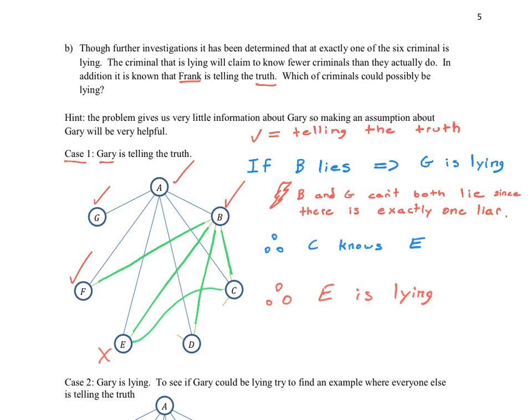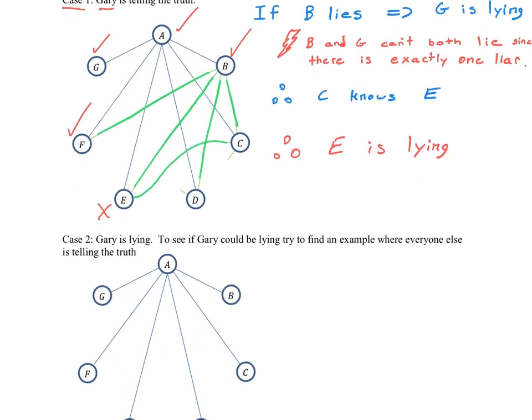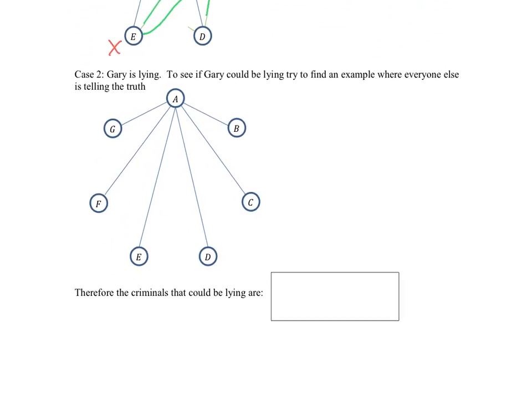Let's take a look at case two. In case one, it was forced that E was the liar. Could there be any other possible liars? In case two, we're now assuming that Gary is lying. So Gary could be the other liar. When Gary is telling the truth, it forces E to lie. What could the possibilities be if Gary is lying? All we have to do here is try to find an example where Gary is lying. So see if you can do this. Try to make connections. You'll have to make Gary connected to more than one other, so that everyone else is telling the truth, and Gary is that exactly one liar out of the bunch. Pause the video now and see if you can make those connections.